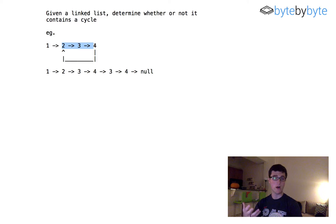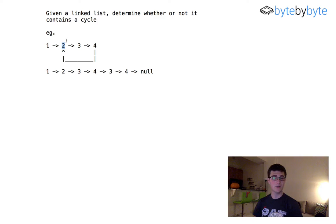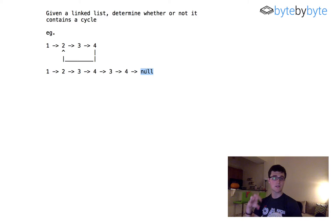That's a pretty straightforward solution and it's going to take linear time because you only have to iterate over the whole list once. As soon as you come back to a previously visited node, you know there's a cycle. The downside is that it's also going to take O(n) space because you're going to have to store every node you've visited. So that's an okay solution, and I actually want to implement this first and then we can talk about how we might improve on it.